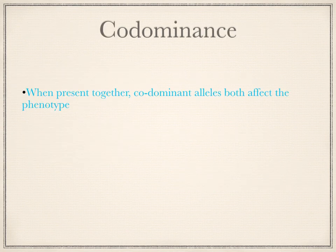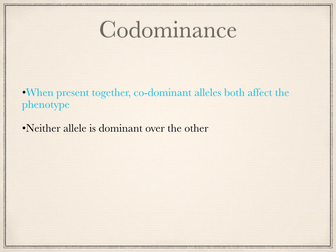Looking at codominance: when present together, codominant alleles both affect the phenotype. Neither allele is dominant over the other. An example would be if you cross a red flowering plant with a white flowering plant. The allele for the red colour and the allele for the white colour are both dominant, so they're codominant — meaning neither one is dominant over the other.